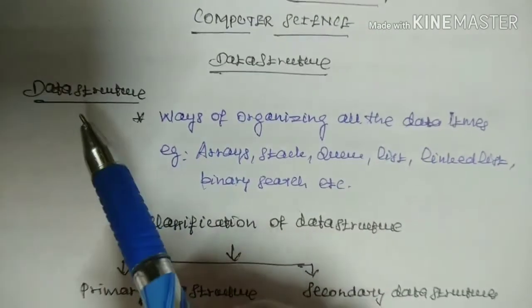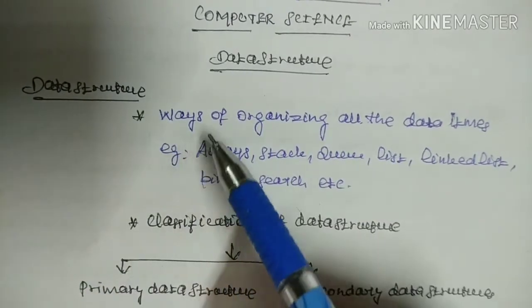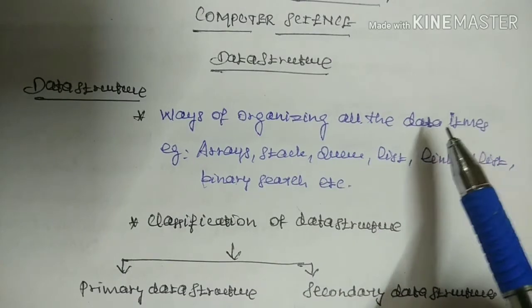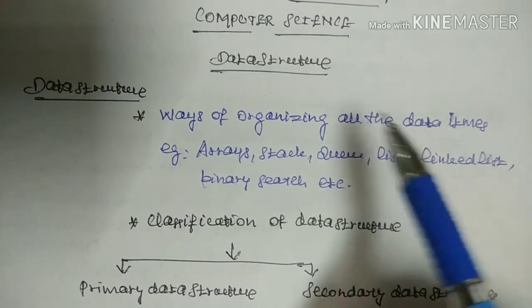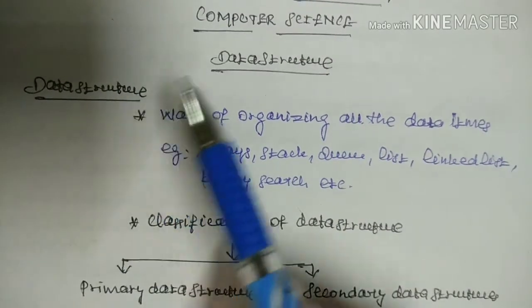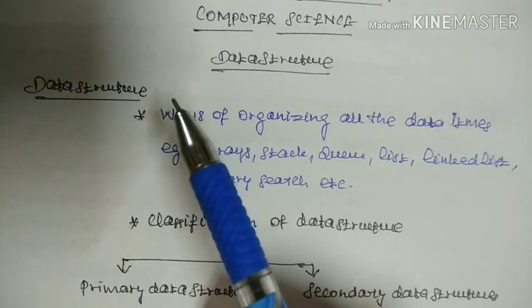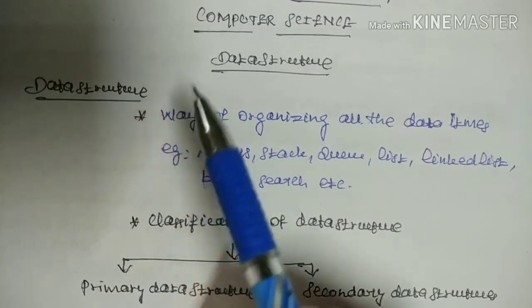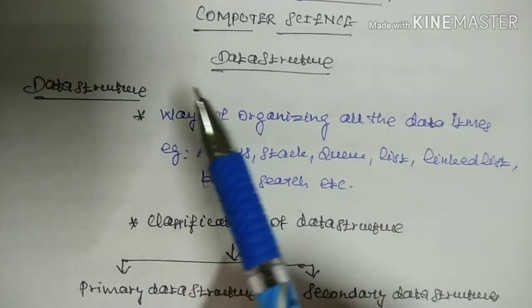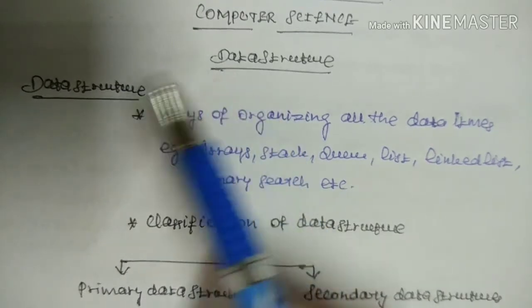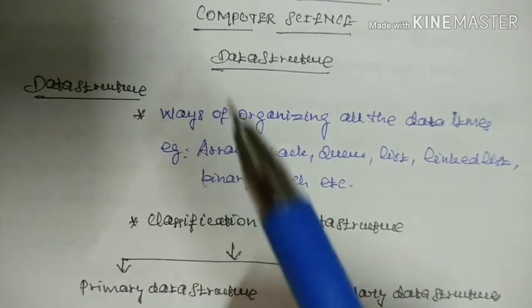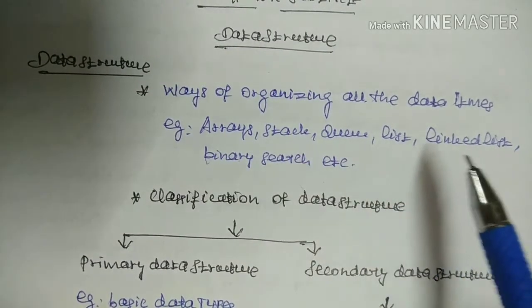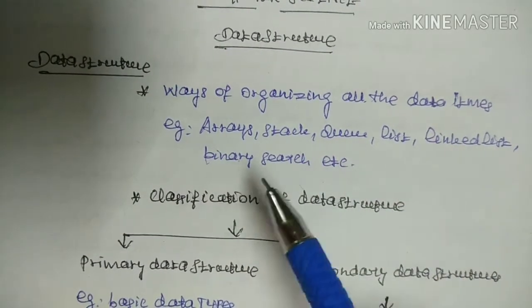First, introduction about Data Structures. A Data Structure is a way of organizing all the data items. It is used to store the data and also store the relationship between the data. Examples of data structures are Arrays, Stack, Queue, List, Linked List, Binary Search, etc.